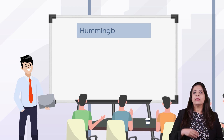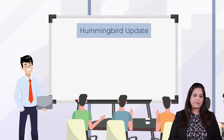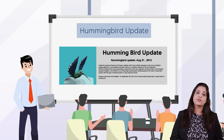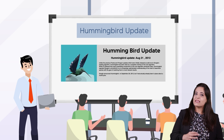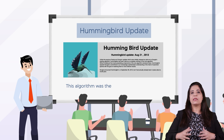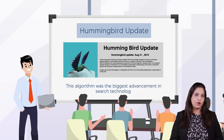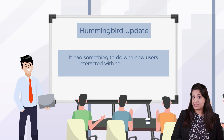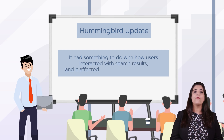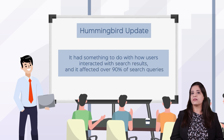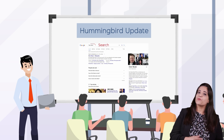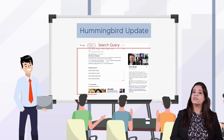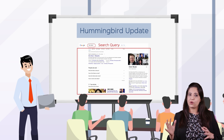Next, we talk about the Hummingbird update. The Hummingbird update was first introduced on September 26, 2013. This algorithm was the biggest advancement in search technology. It had something to do with how users interacted with search results and it affected over 90 percent of search queries.